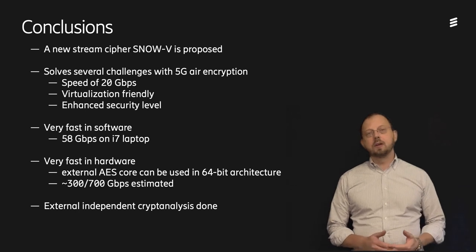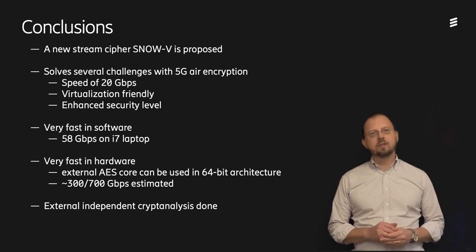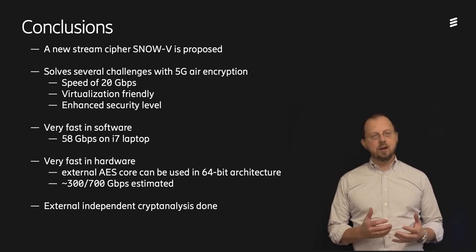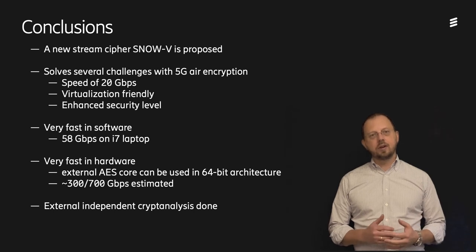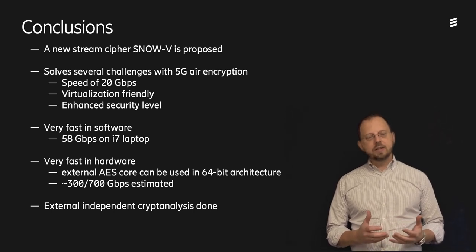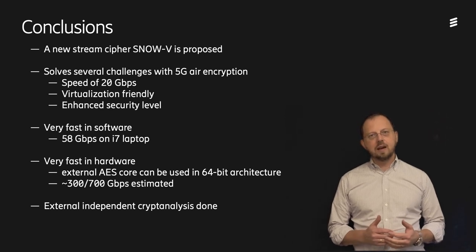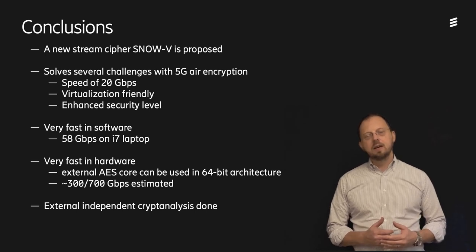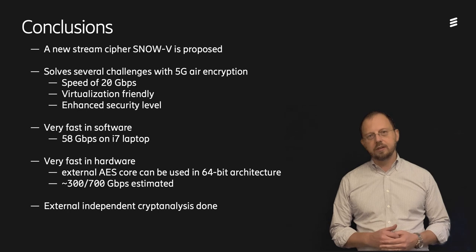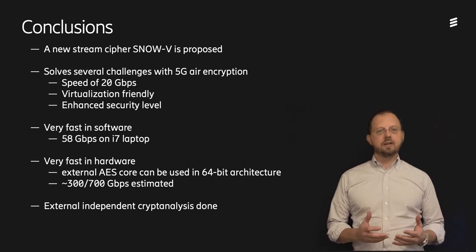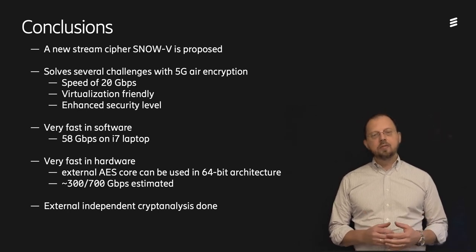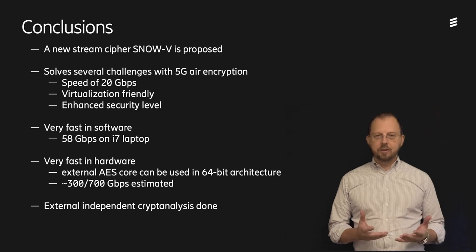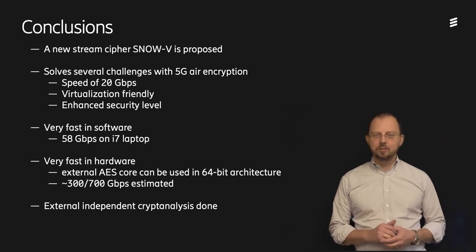To conclude, a new stream cipher SNOW-V is proposed. It solves several of the new challenges with 5G air encryption, such as high speed, enhanced security level, and software implementation friendliness. It reaches 58 Gbps on an Intel i7 laptop, and is estimated to do 300 to 700 Gbps in a hardware implementation, depending on the chosen architecture. Apart from the cryptanalysis done in the presented paper, SNOW-V has also been evaluated by independent external crypto experts. Thank you, and we hope you'll find good use of this new stream cipher.